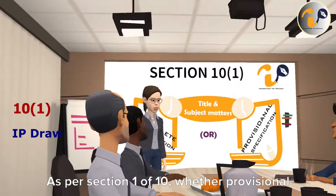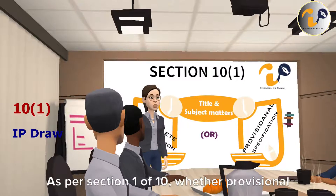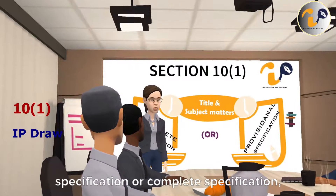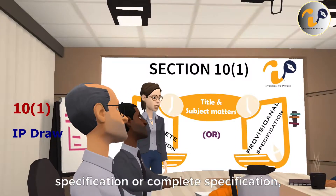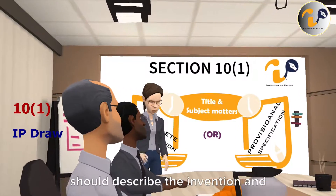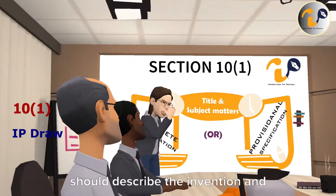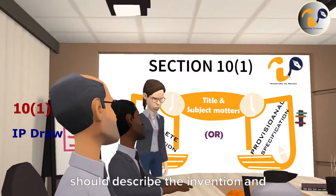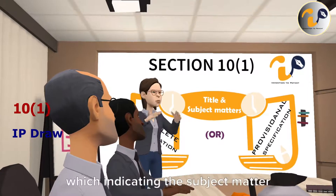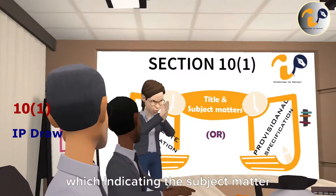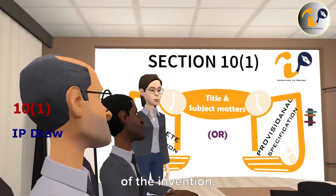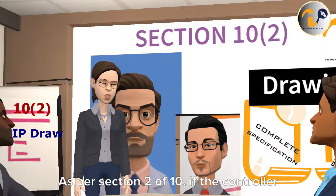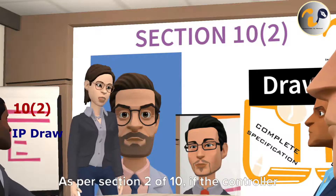As per Section 10(1), whether provisional specification or complete specification should describe the invention and its title, indicating the subject matter of the invention.